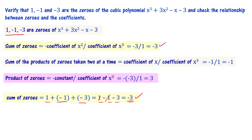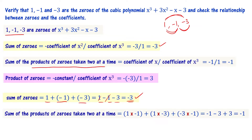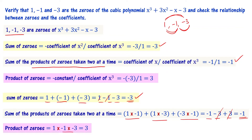Second relation: sum of products of zeros taken two at a time. The combinations are: 1 times minus 1, plus 1 times minus 3, plus minus 3 times minus 1. That equals minus 1 minus 3 plus 3 equals minus 1, which matches the formula value of c by a equals minus 1 by 1. Third relation: product of zeros equals 1 times minus 1 times minus 3 equals 3, which matches minus d by a equals minus(minus 3) by 1 equals 3. All three relations are verified.